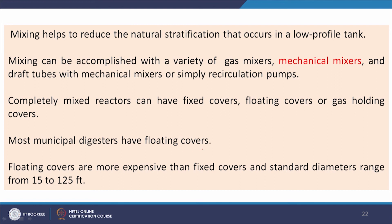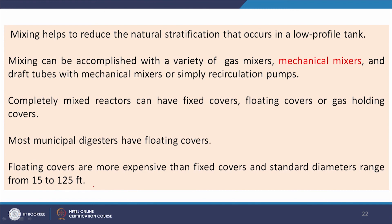There are two types of anaerobic digesters: low rate and high rate. Low-rate digesters have longer detention times (30–60 days) and lower throughput, with feeding rates of 0.5–1.5 kg volatile solids per m³ per day. High-rate digesters have retention times less than 15 days, with feeding rates of 1.6–6.4 kg volatile solids per m³ per day. Most digesters are heated and operated in the mesophilic range, usually made of concrete or steel.